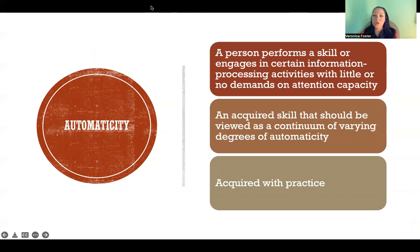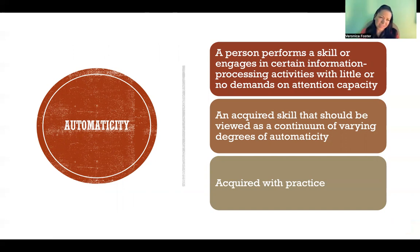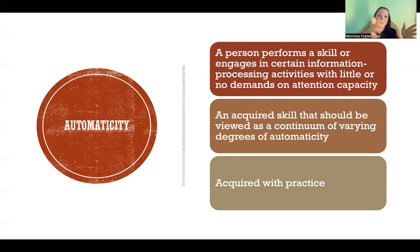Automaticity refers to how we automatically are able to complete an action after we've had enough experience and practice with it. We can learn automaticity of pretty much any skill — most motor skills can become automatic if we practice them enough. We should view automaticity more on a spectrum, like a sliding scale. It's not either automatic or not; we have varying degrees of automaticity depending on the skill and how much practice we have with that action.